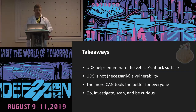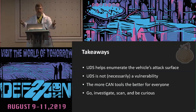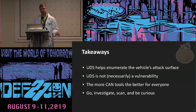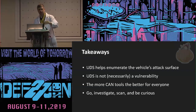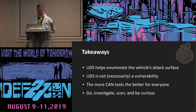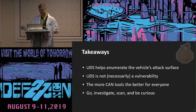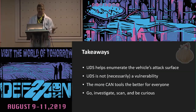Quick wrap-up: UDS helps you enumerate the vehicle's attack surface. It lets you figure out what ECUs are present, what data is in there, and that data can then be used to more easily reverse-engineer what's going on. UDS itself is not necessarily a vulnerability in and of itself — it's simply a way to discover the functionality present on the vehicle. The functionality itself might be the vulnerability. If I can unlock a vehicle from an external location, that is the vulnerability, not the fact that I found it with UDS.